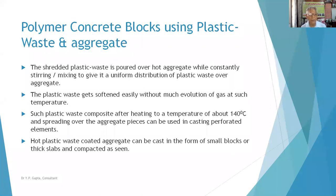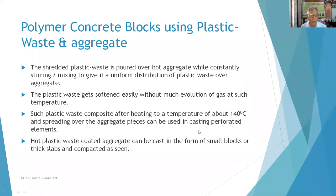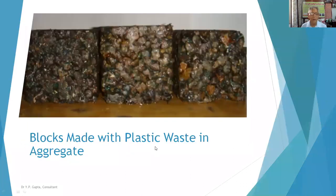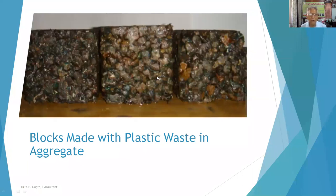The shredded plastic waste is poured over the hot aggregate while constantly stirring to give uniform distribution. The plastic waste is softened easily without much evolution of gas at such temperature. The hot plastic-waste-coated aggregate can be cast in the form of small blocks, thin slabs, thick slabs, or in perforated form. This is a typical form of the plastic aggregate block — solid in appearance with multiple voids visible.